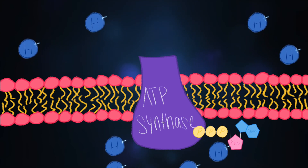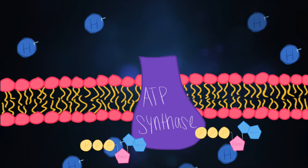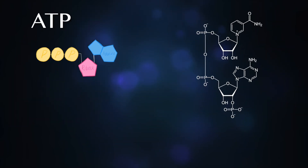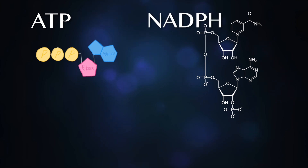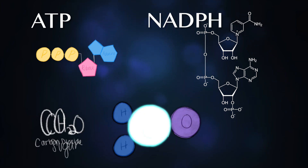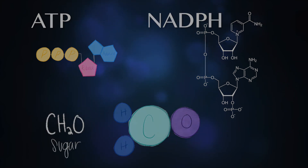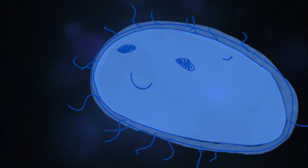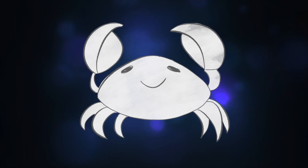Their kinetic energy is then stored as ATP. And through the Calvin cycle, this ATP, with the help of a high energy electron carrier called NADPH, helps turn CO₂ into sugar. Ta-da! Food for a lovely prokaryote, which means food for a crab.